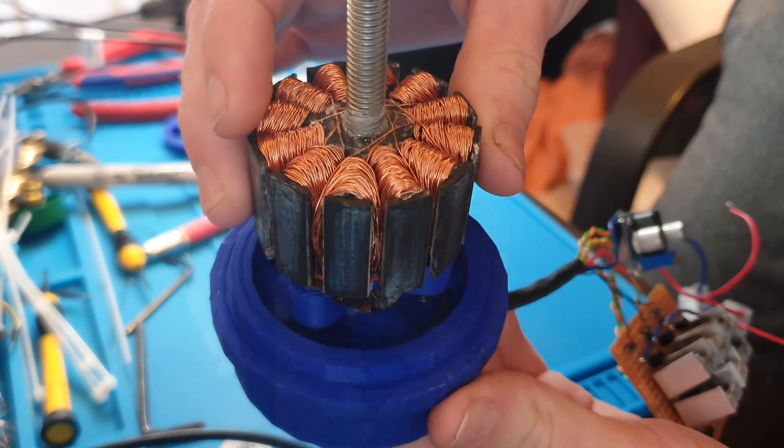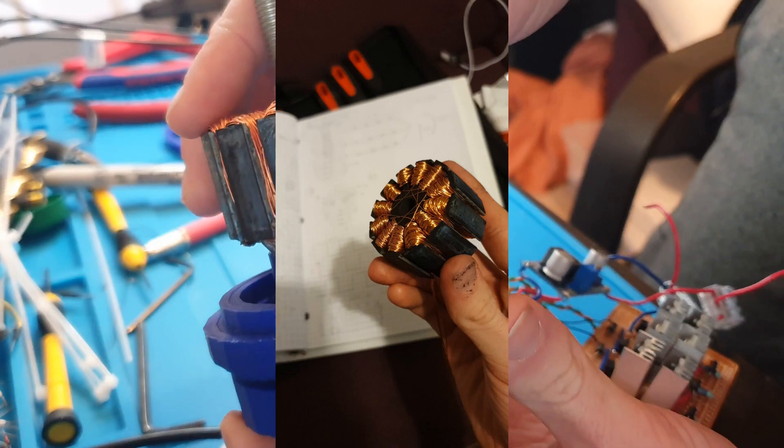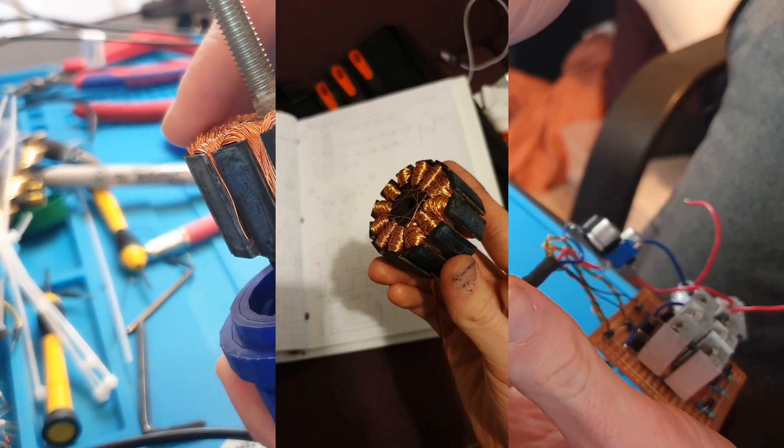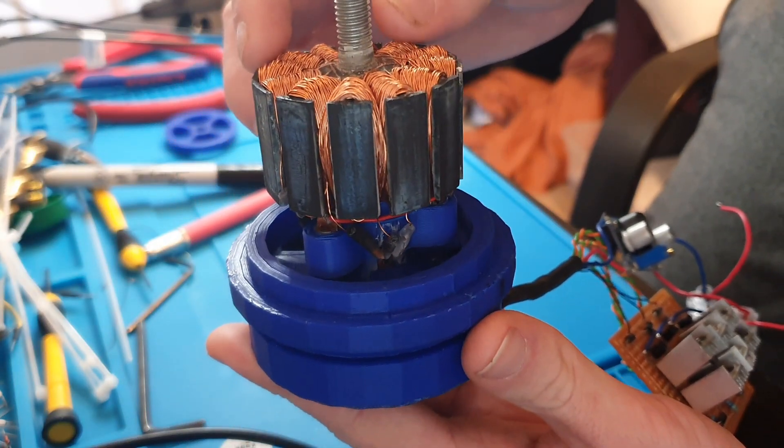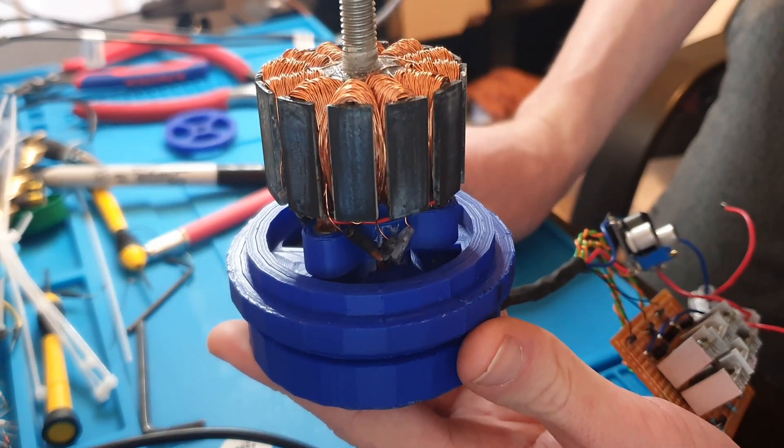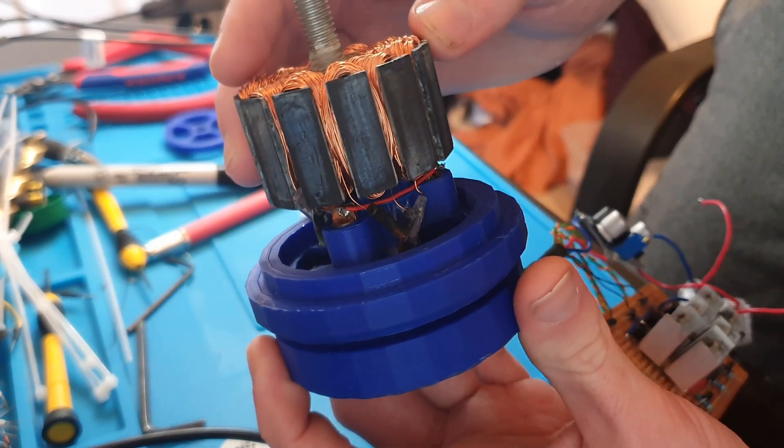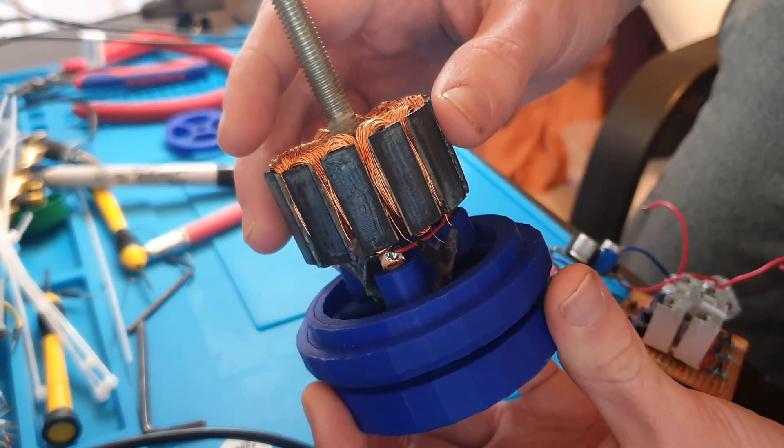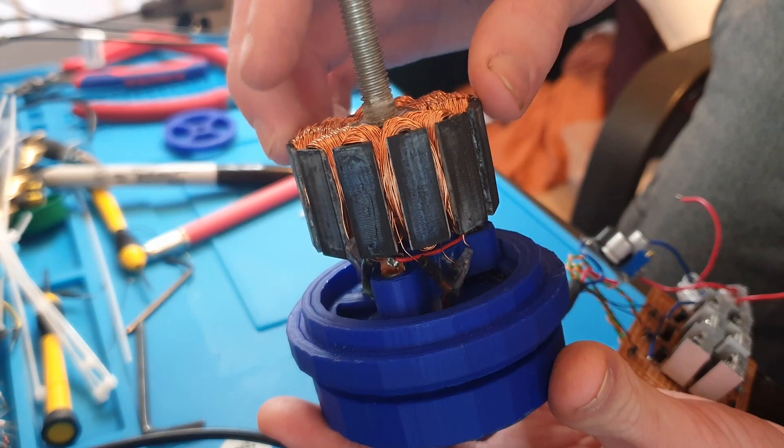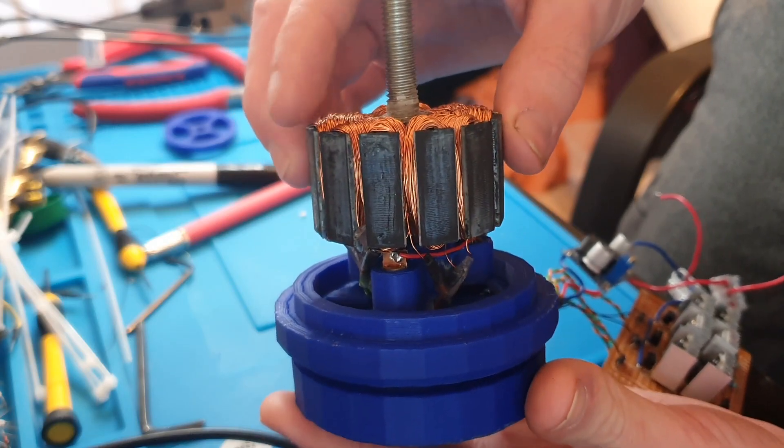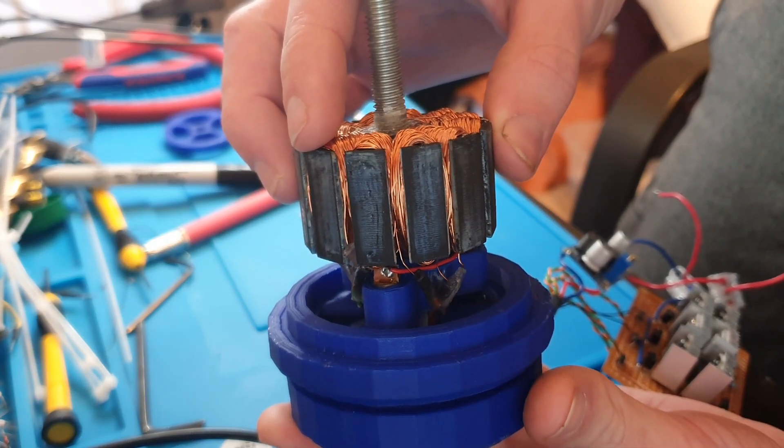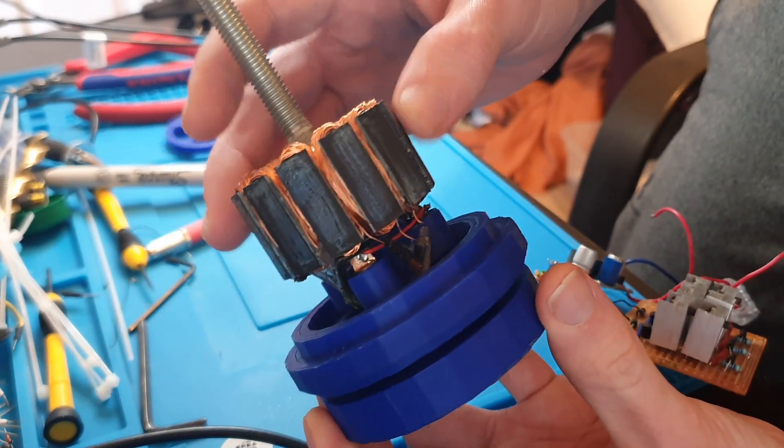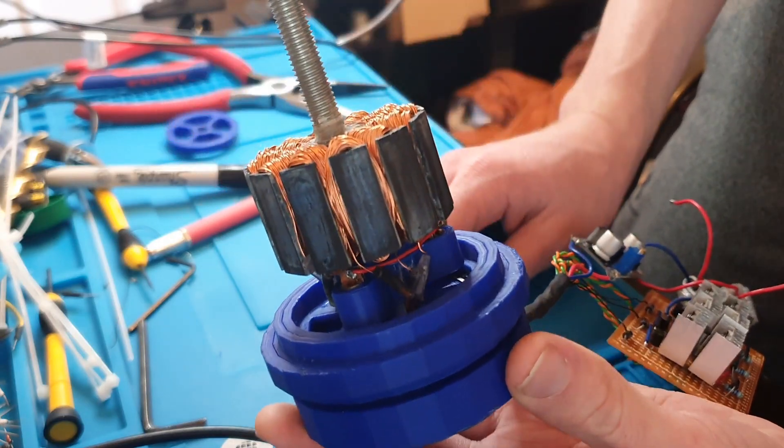The resin just glues it all together. That's better than 3D printing your stator or making it out of solid iron. The reasoning is that 3D printed plastic doesn't have high electromagnetic permeability, so you won't get a strong magnetic field. And if you made a stator out of solid iron, you would have lots of eddy currents and reduce the motor's efficiency.